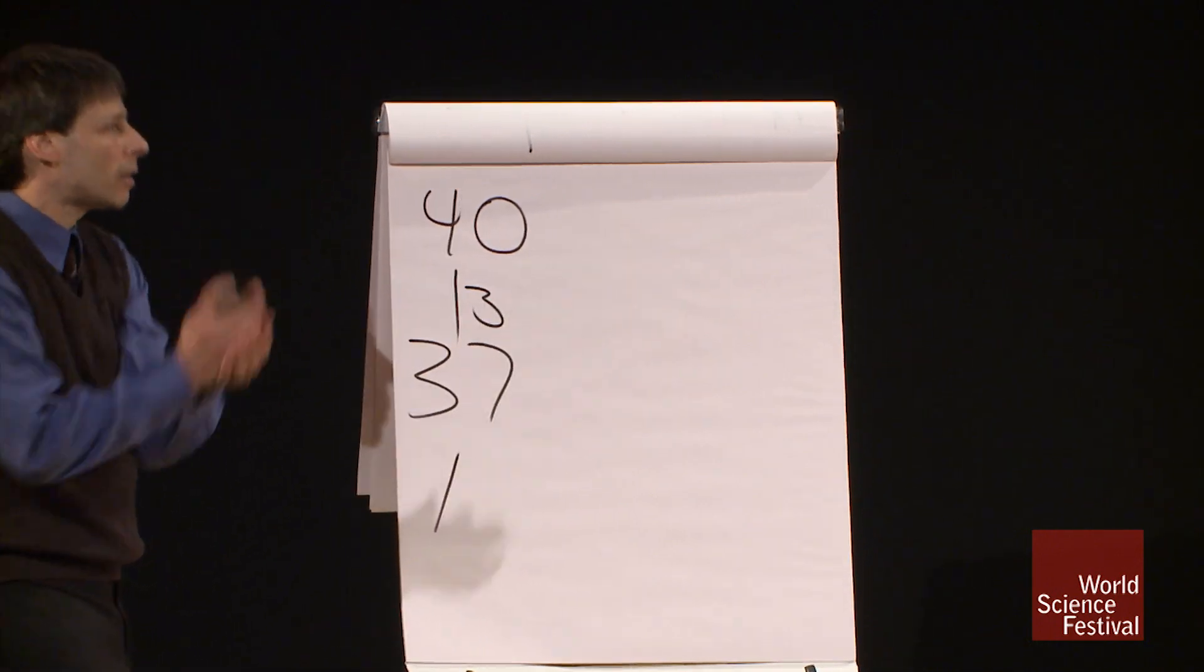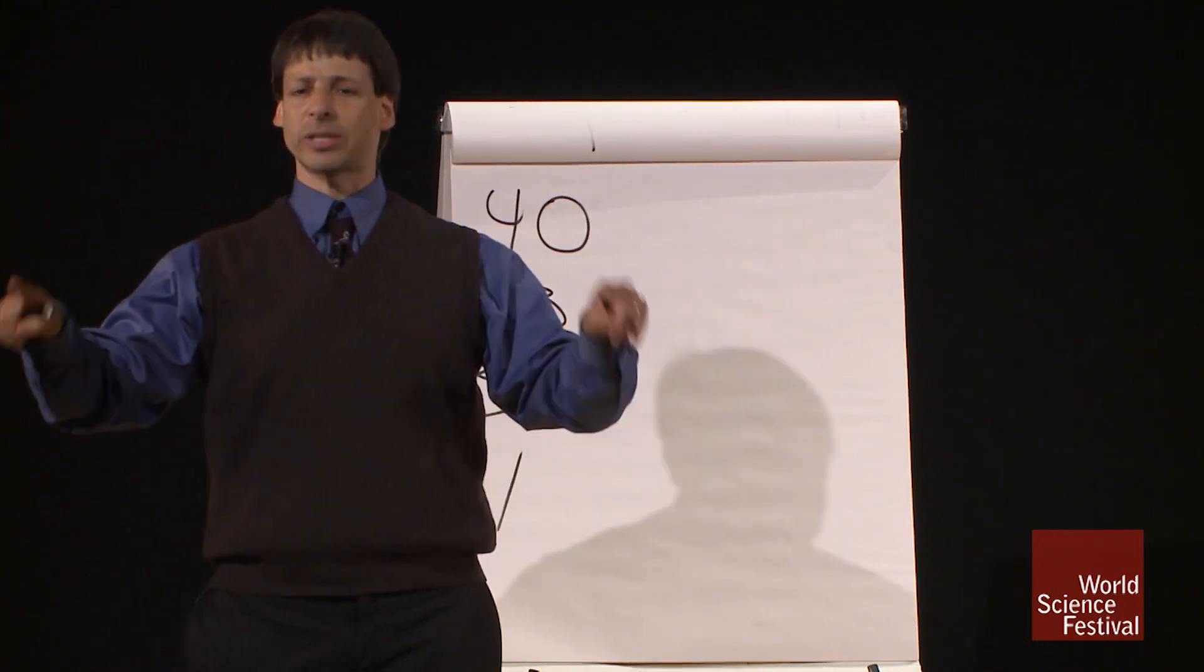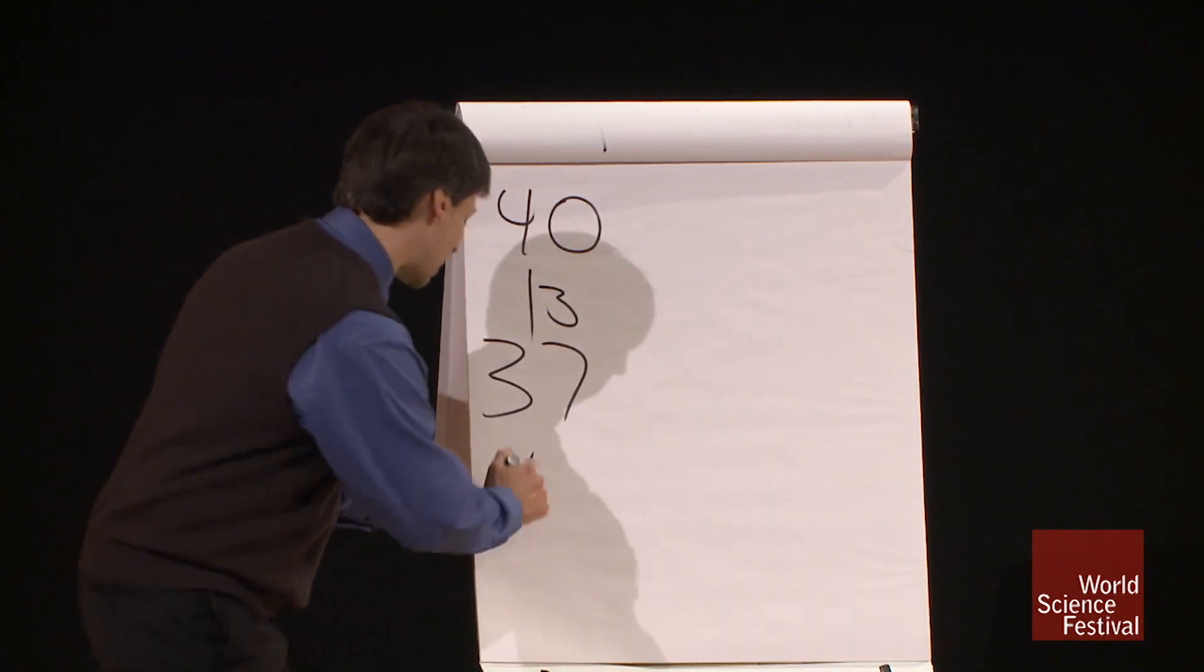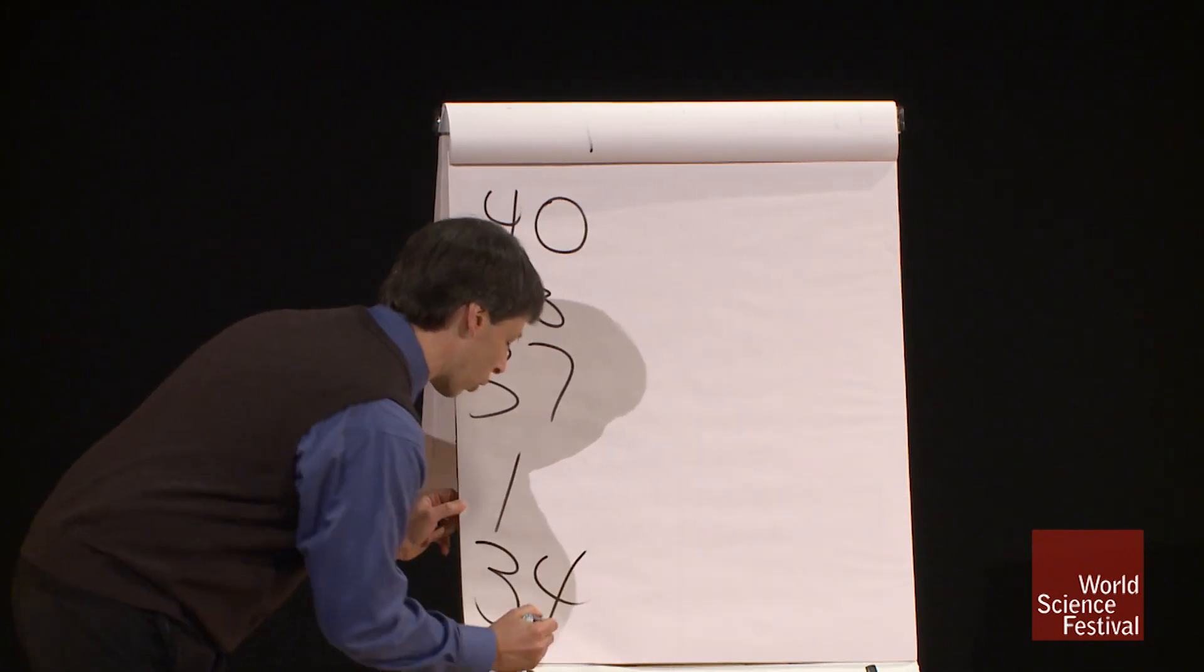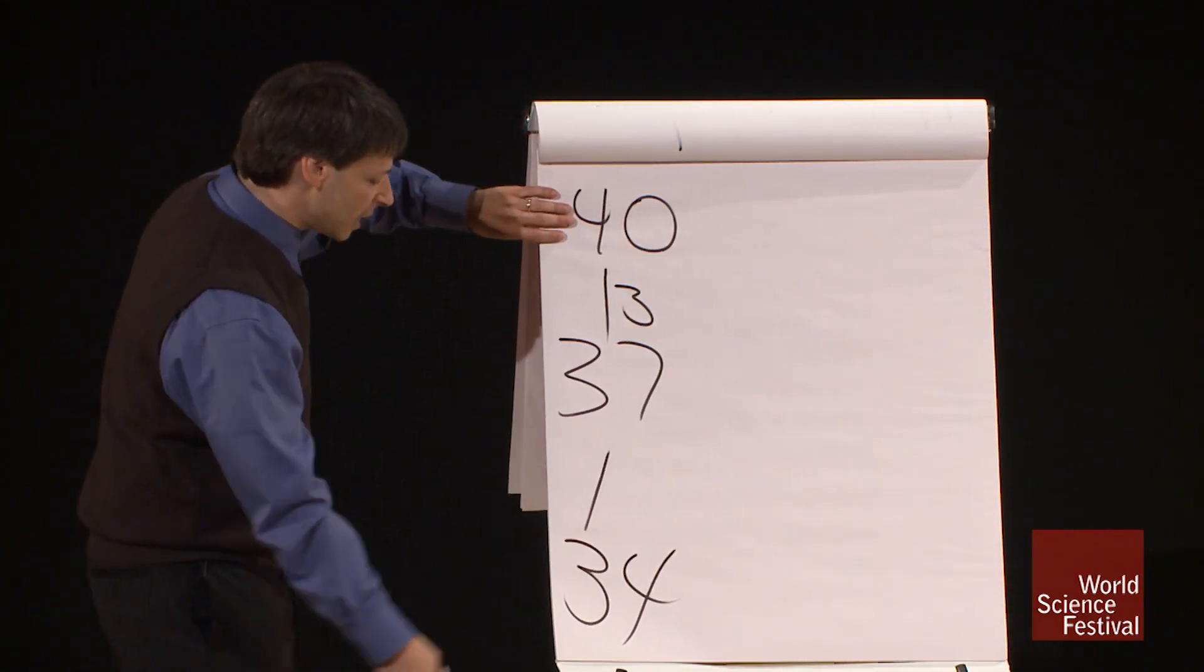Now, whatever comes up must come down. If I go up 3 to 40, I have to go down the same distance to the number 34. So the first part of my calculation is I do 40 times 34.